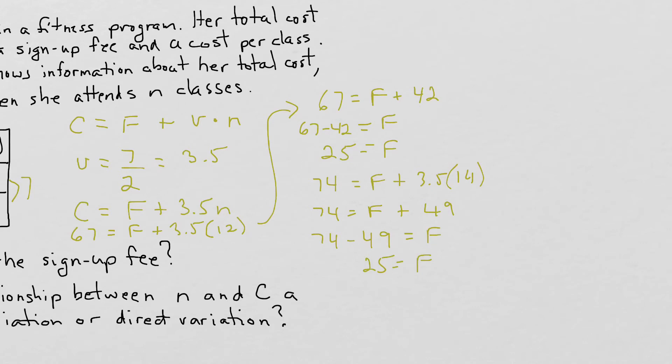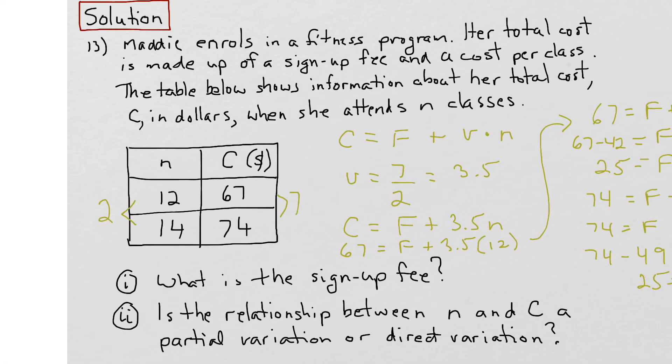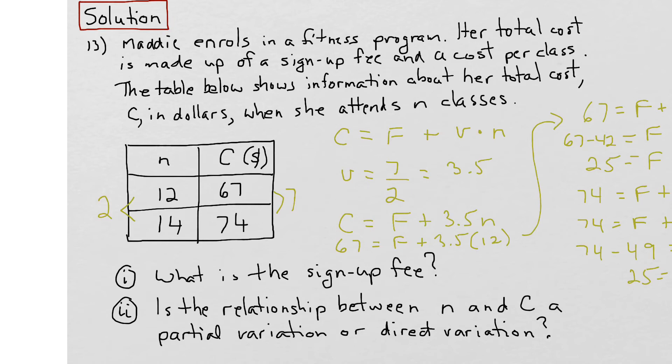Okay, so now we're fairly confident that we can move back and answer the questions here. So what is the sign-up fee? Well, the sign-up fee is $25. And is this relationship between n and C partial or direct variation? Well, it's partial variation because we have an F value, which means the line does not go through the origin. There is a starting value, and then from that starting value, the relationship begins.